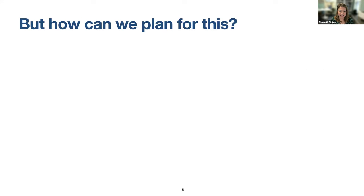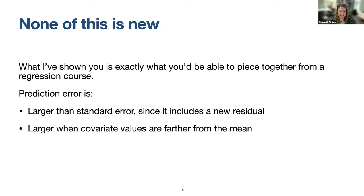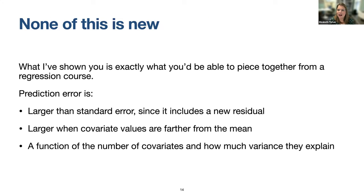Q&A: The first question is what parametric assumptions are being used — are they Gaussian? Yes, I'm assuming Gaussian right now, and I want to be clear: I know people in causal inference are uncomfortable with parametric assumptions, but I'm trying to mirror what's happening in power analysis formulas. In power analysis formulas, people are quite comfortable with parametric assumptions because they don't have the data yet, so we actually make some more stringent assumptions there.